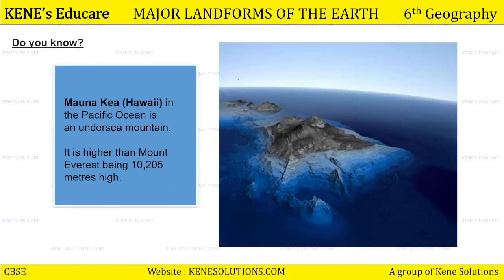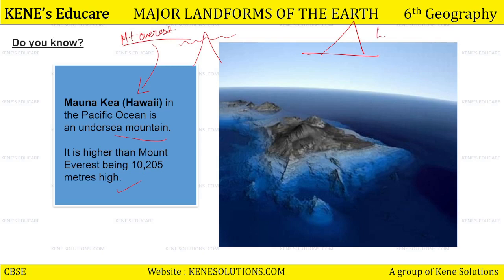Do you know that Monarchia, jo ki Hawaii mein hai — Hawaii, North America ke paas mein hai — in the Pacific Ocean, is an undersea mountain? Mountain hai, par voh sea ke andar bana hua mountain hai. 10,205 meters high. Toh phir hum log Mount Everest ko sabse unchi peak kyun bolte hain? Because it is above the surface — above the surface hai, isliye hum usko highest peak bolte hain. Aur yeh Monarchia, sea ke andar hai. Agar sea bed tak jao, toh iski height hai nearly 10,205 meters high.